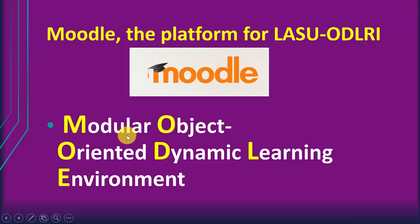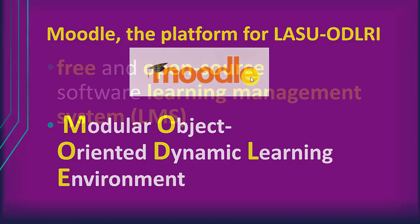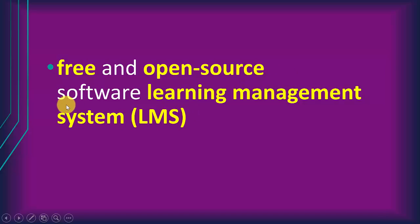So M is Modular, O is Object, O is Oriented, D is Dynamic, L is Learning, E is Environment. Moodle is free. It's also open source — that means you can adjust, manipulate, and customize it the way you want. And it's a Learning Management System, LMS.